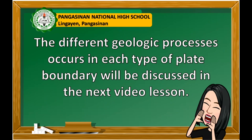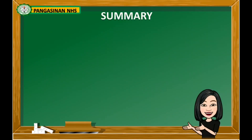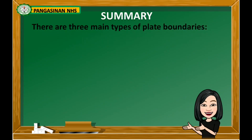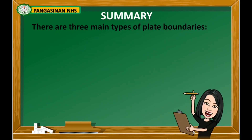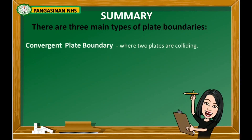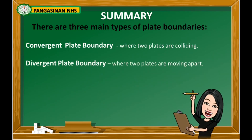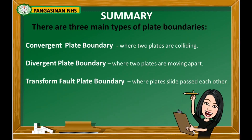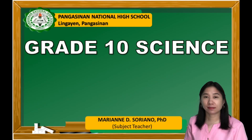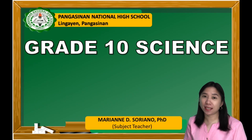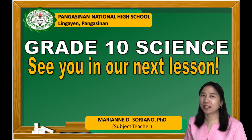Please take note that the different geological processes occurring at each type of plate boundary will be discussed in the next video lesson. To summarize, there are three main types of plate boundaries: convergent plate boundary, divergent plate boundary, and transform fault plate boundary. I hope you enjoyed and learned something today. This is Marian Soriano — see you in our next lesson.